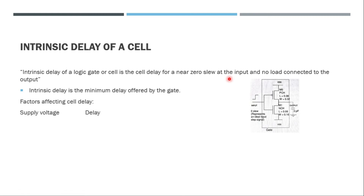The factors affecting cell delay are as follows. First, supply voltage: as the supply voltage increases, the delay reduces, making the circuit faster. Conversely, decreasing supply voltage increases delay, which becomes a problem. Second, the load at the output pin: as the load at the output increases, the delay also increases, because it takes more and more time to charge up the load capacitance.